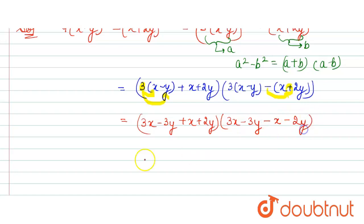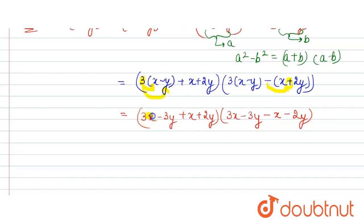Now combining like terms: 3x plus x is 4x, and -3y plus 2y is -y in the first bracket. In the second bracket, 3x minus x is 2x, and -3y minus 2y is -5y.